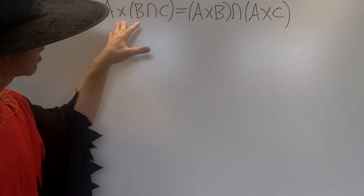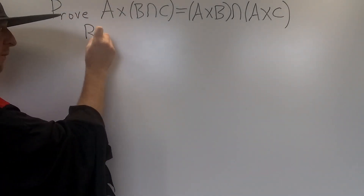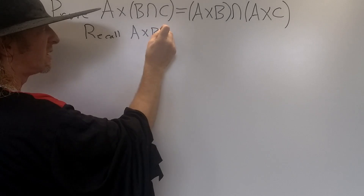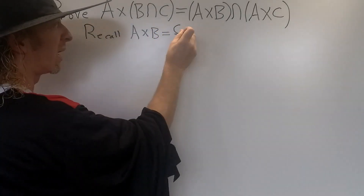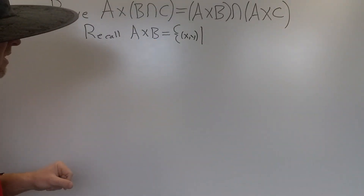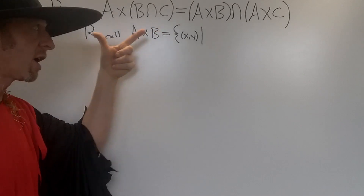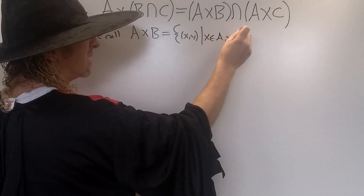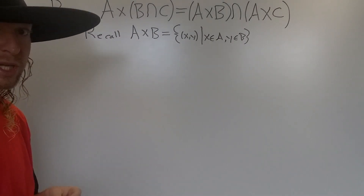Before we do that, let's recall what we mean by this cross symbol. If you have A cross B, this is the set of all ordered pairs such that X is in A and Y is in B. So it's all the ordered pairs where the first component comes from the first set and the second component comes from the second set. I use a comma here but you can use 'and' instead, which I'll do in the actual proof.